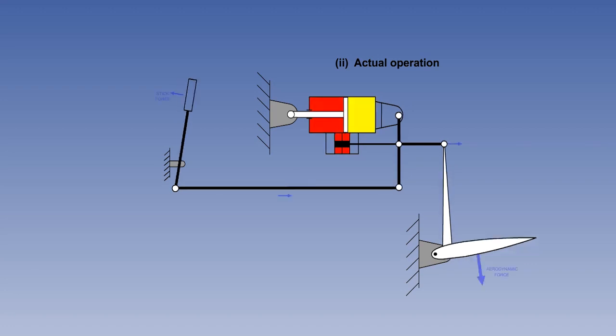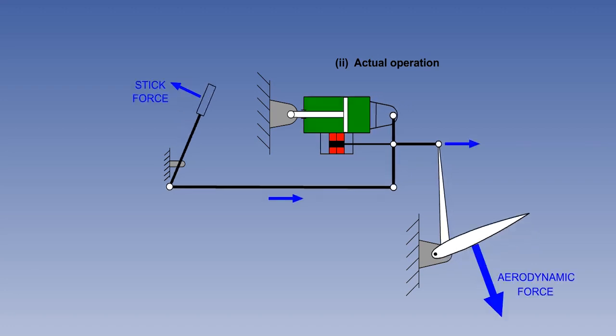In reality, as soon as the pilot starts to move the cockpit control, the PFCU immediately moves the control surface to the angle and at the rate of motion commanded.